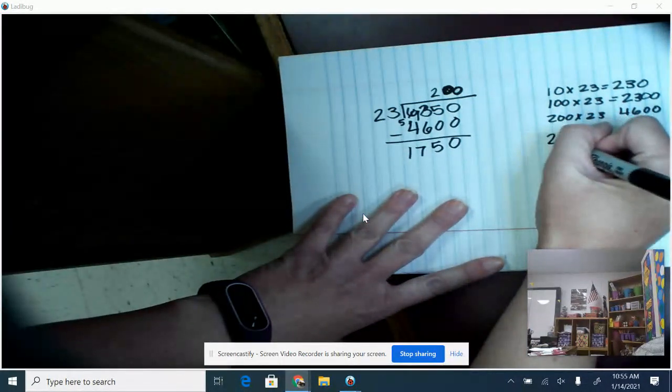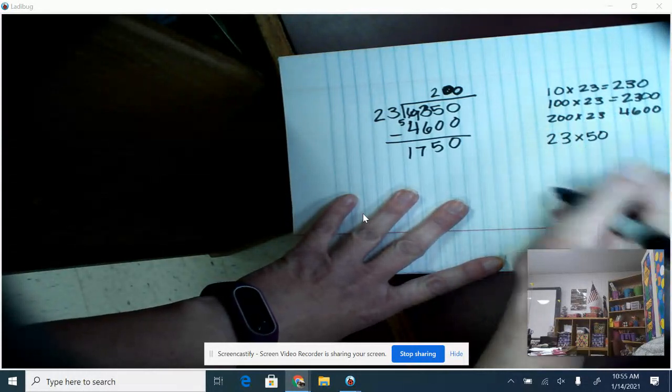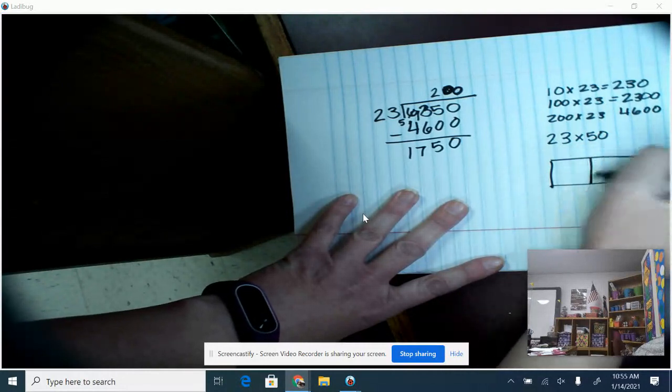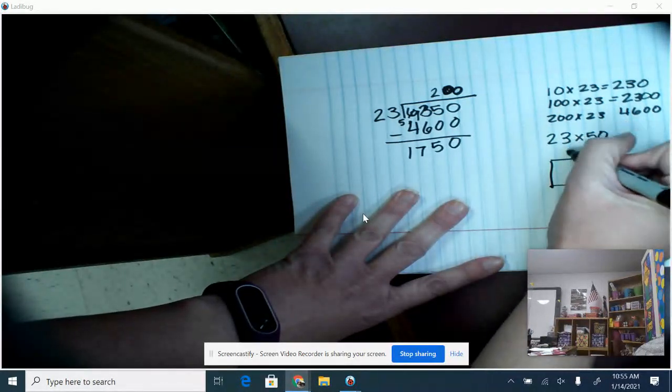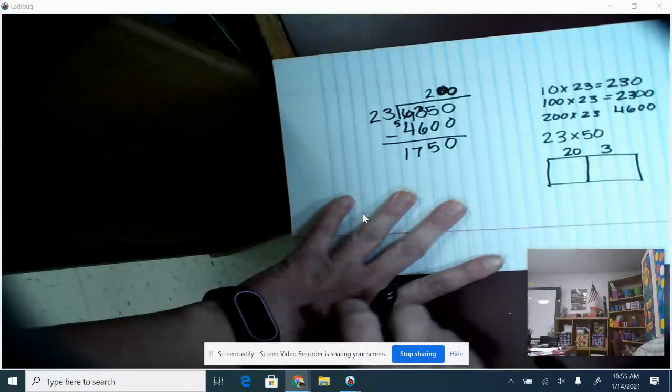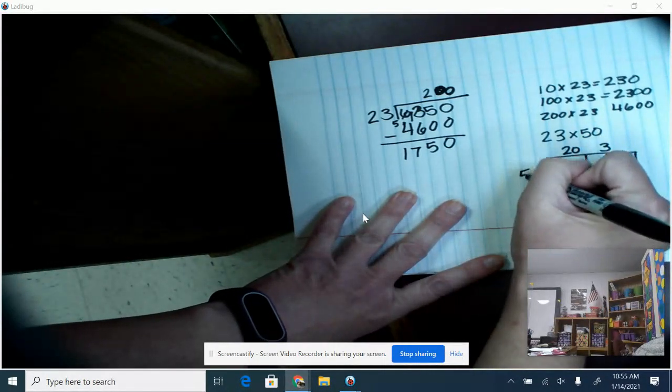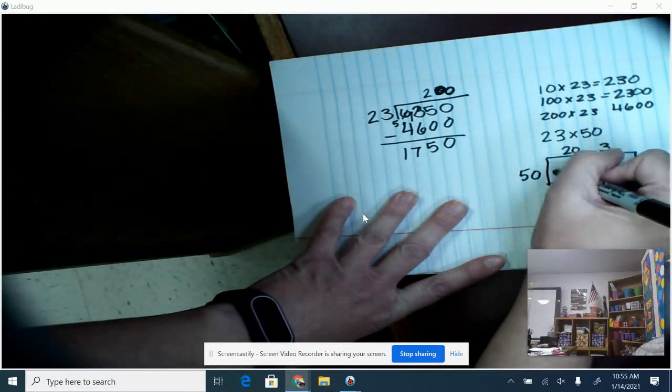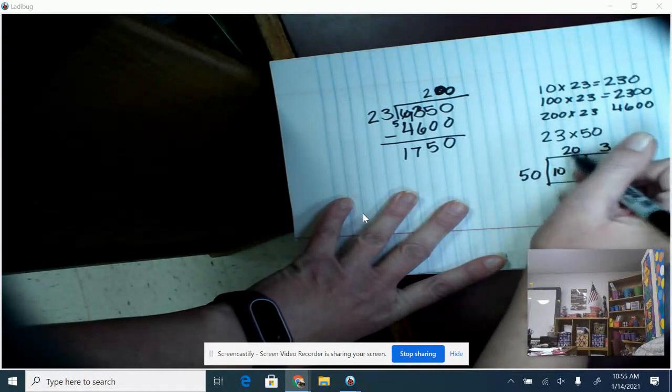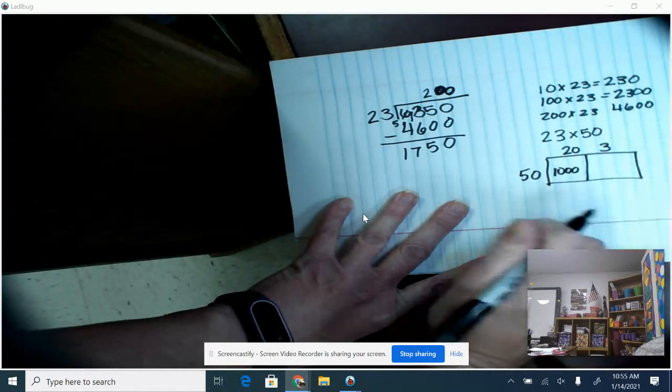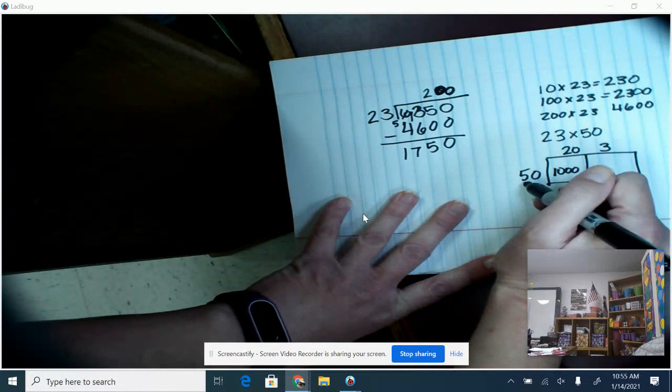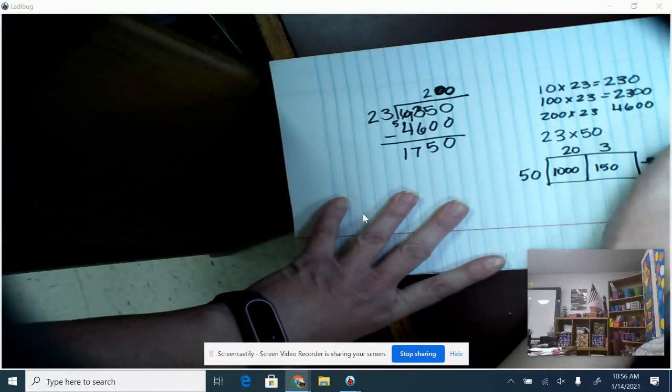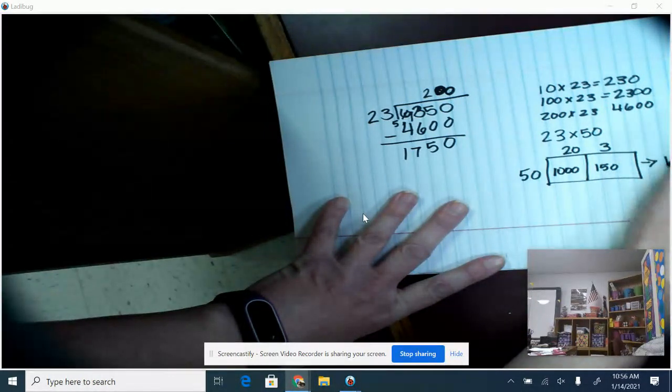So I'm going to do 23 times 50, and I'm going to go ahead and use the area model for this. So I'm going to break up the 23 into 20 and 3, and then I'm multiplying that by 50. So 50 times 20, since 5 times 2 is 10, then I have the two zeros, so I end up with 1,000. And then 50 times 3 is going to be 150. So then when I put these together, I end up with 1,150.